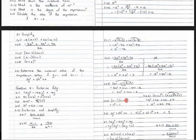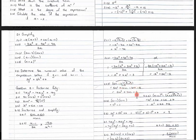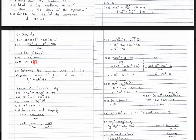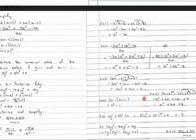Question 2.3: use the FOIL method. You've got 5m times 5m giving 25m squared. 5m times 2 gives 10m. Negative 3 times m gives negative 3m. Negative 3 times 2 gives negative 6. Collecting like terms in the middle: 10m minus 3m gives 7m. So the answer is 25m squared plus 7m minus 6. Question 2.2.4: you can recognize the difference of two squares because you have the same terms a and 1, with only the signs differing — giving a squared minus 1.